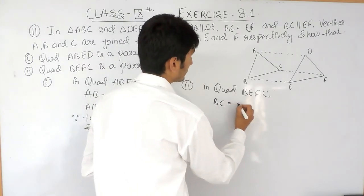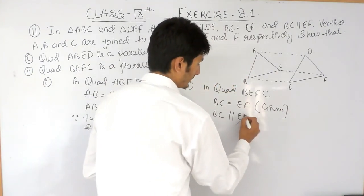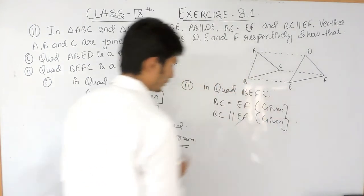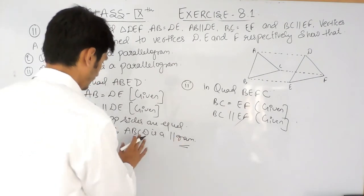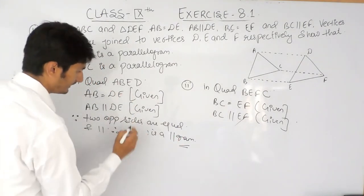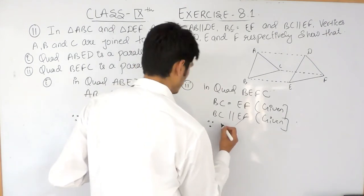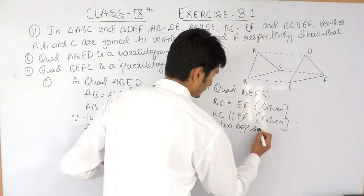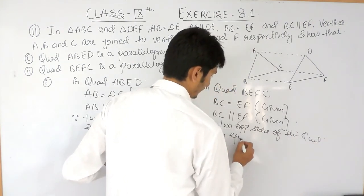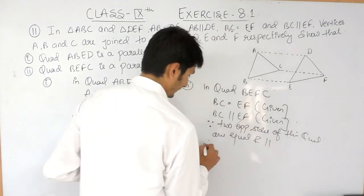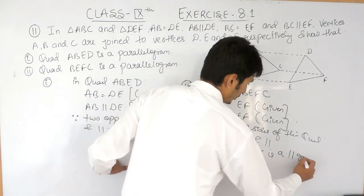Side BC is given equal to EF — this is given to you. And similarly, BC is parallel to EF — this is again given to you. Because the two opposite sides of this quadrilateral are equal and parallel, therefore quadrilateral BEFC is a parallelogram.